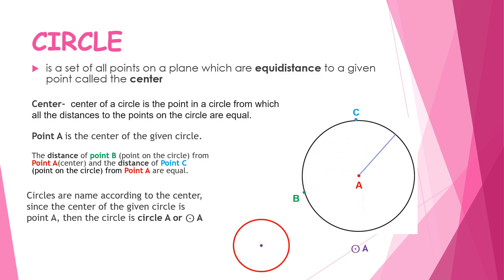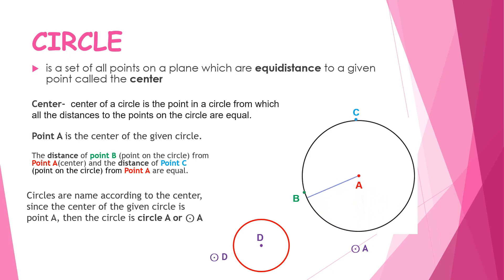We name circles this way to differentiate them from other circles. Let's have another circle whose center is point D — that circle is called Circle D. So now we have two distinct circles: Circle A and Circle D. Now let's look at the related terms.